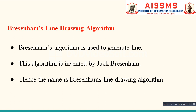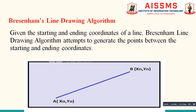Bresenham's algorithm is used to generate a line. This algorithm was invented by Jack Bresenham, and hence the name is Bresenham's line drawing algorithm. In this algorithm, the coordinates of the starting point and ending point of the line are given to us. A is the starting point with coordinates x0, y0, and B is the ending point with coordinates xn, yn. The line is made up of a number of points or pixels, and our goal is to find the coordinates of all points between starting point A and ending point B in order to generate line AB.